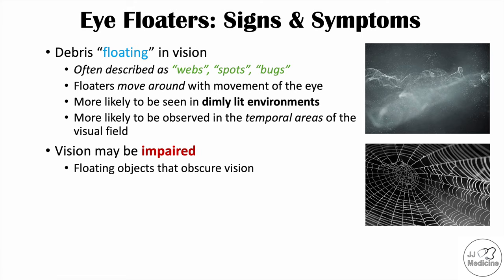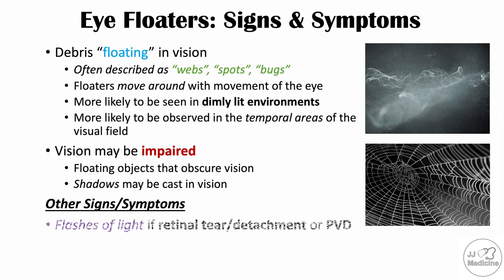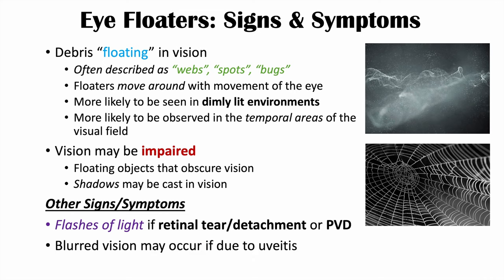If floaters are large enough, they can cause a shadow to form — you may see a dark object as though a shadow is being cast. Other associated signs and symptoms include flashes of light, which is important to recognize because it may indicate retinal tear or detachment, or PVD. Since the retina is where vision is detected, breaking of the retina can produce flashing light. Flashes of light combined with more floaters may signal retinal detachment or tear. Blurred vision may also occur if the eye floaters are due to uveitis.